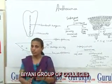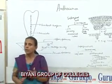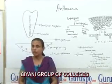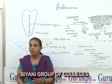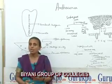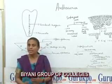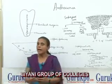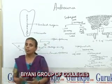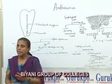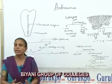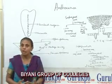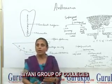As you all know, Anthoceros has 200 species. These species of Anthoceros are found in moist, shady places alongside the banks of rivers and in rock crevices. They are distributed in the temperate and tropical regions of the world.